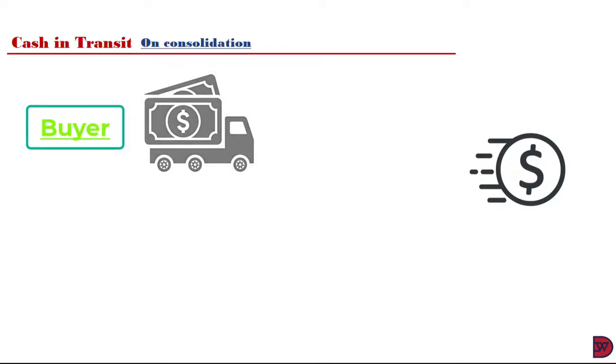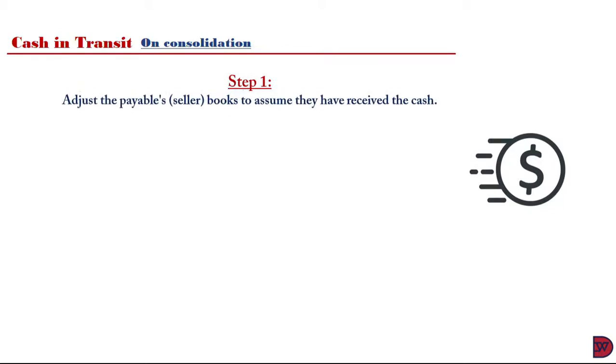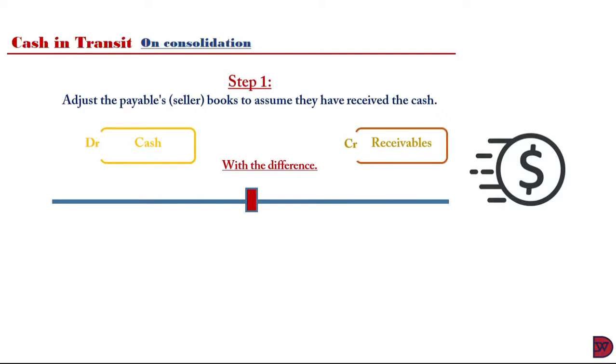The other causal effect of discrepancies will be cash in transit. This is where the buyer sends out an amount to clear up part or whole of its debt with the seller. Once that is done, the buyer makes the necessary adjustment in his books but the seller does not receive it on time, hence it does not make the necessary adjustment and causes a difference. It will also go through two steps. The first is to adjust the payables of the seller's books to assume that the cash has been received. We do so by debiting the cash to increase it, then we credit the receivables to reduce the balance with the amount that is transferred and not received. Once that is done, we proceed to step two by eliminating the intergroup trade receivables and payables, if any.